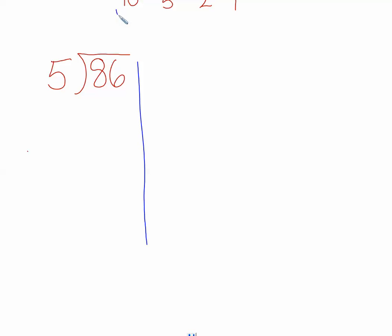So to begin with, we have 86, and we need to see how many groups of 5 we can make. The first thing that I taught you guys in class today was, since we all know how to multiply by 10, we want to see if we can make 10 groups of 5. I'm just going to write a 10 over here, and I know that 5 times 10 is 50. So I can definitely make 10 groups of 5 within the number 86.